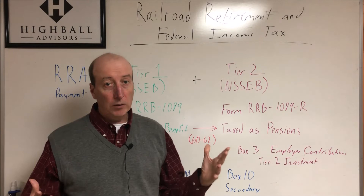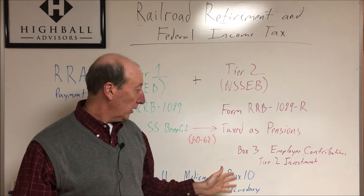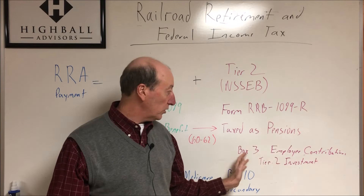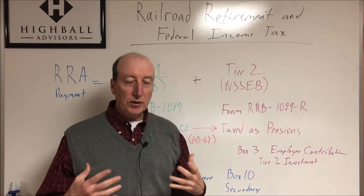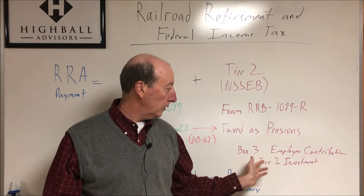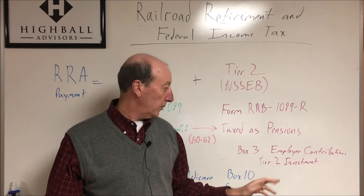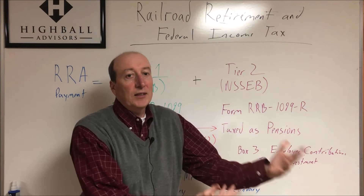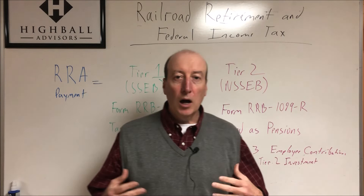A couple of things I'd like to highlight: on your form RRB-1099-R, look at Box 3 — employee contributions. The IRS doesn't treat that as a payment; they consider it an investment. That's basically your Tier 2 investment — you're investing in your annuity, your Railroad Retirement annuity. So that's what Box 3 represents.